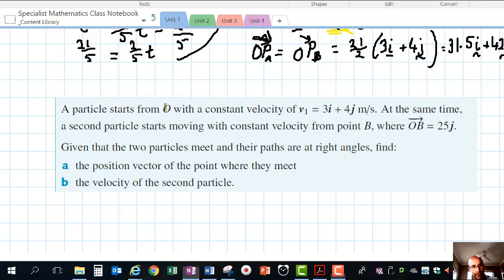Next example. A particle starts from O with constant velocity V1. At the same time, a second particle starts moving with constant velocity from point B. This time the starting points are different. We're given the position vector from O to B is 25j, so B starts further up compared to where A is starting.